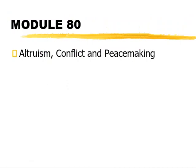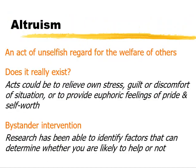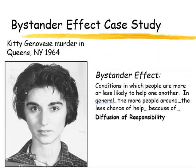The last module of the year covers altruism, conflict, and peacemaking. Altruism is unselfish regard for the welfare of others — but does it actually exist? When someone does something unselfish, you have to question their motive. It could be to relieve their own stress, guilt, or discomfort, to resolve cognitive dissonance, to get euphoric feelings of pride and self-worth, or to get recognition. If that's the case, it's not truly altruism. Looking at bystander intervention, we can determine factors that influence whether someone will act altruistically. One key concept is the bystander effect.